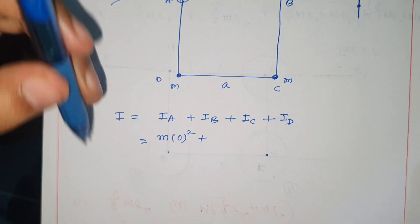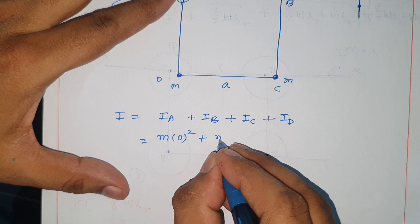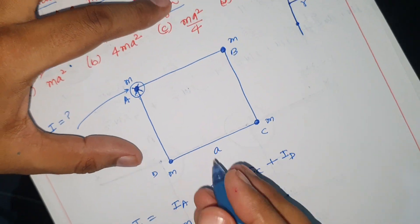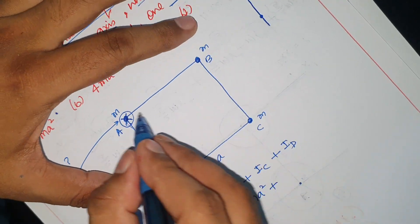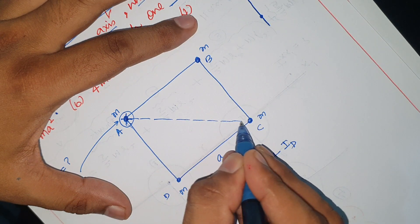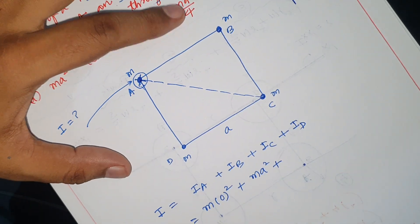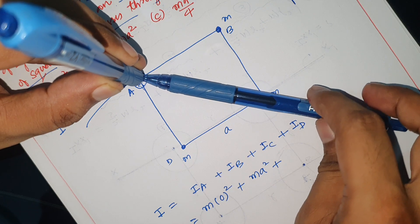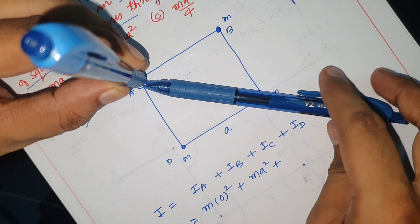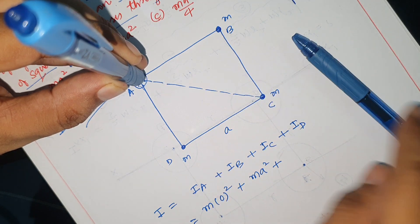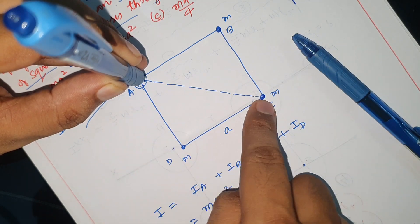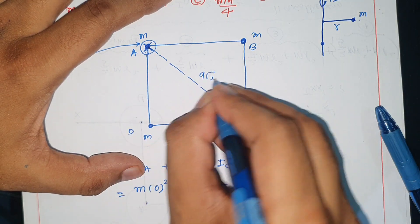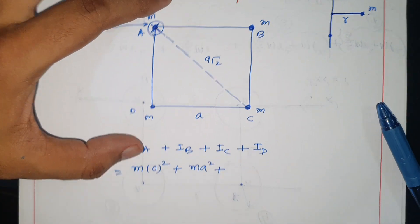So I write B: if I take the distance of B, the perpendicular distance is this. The square diagonal is this. This axis is like this through the corner at 90 degrees. I write this distance: the distance is a root 2.